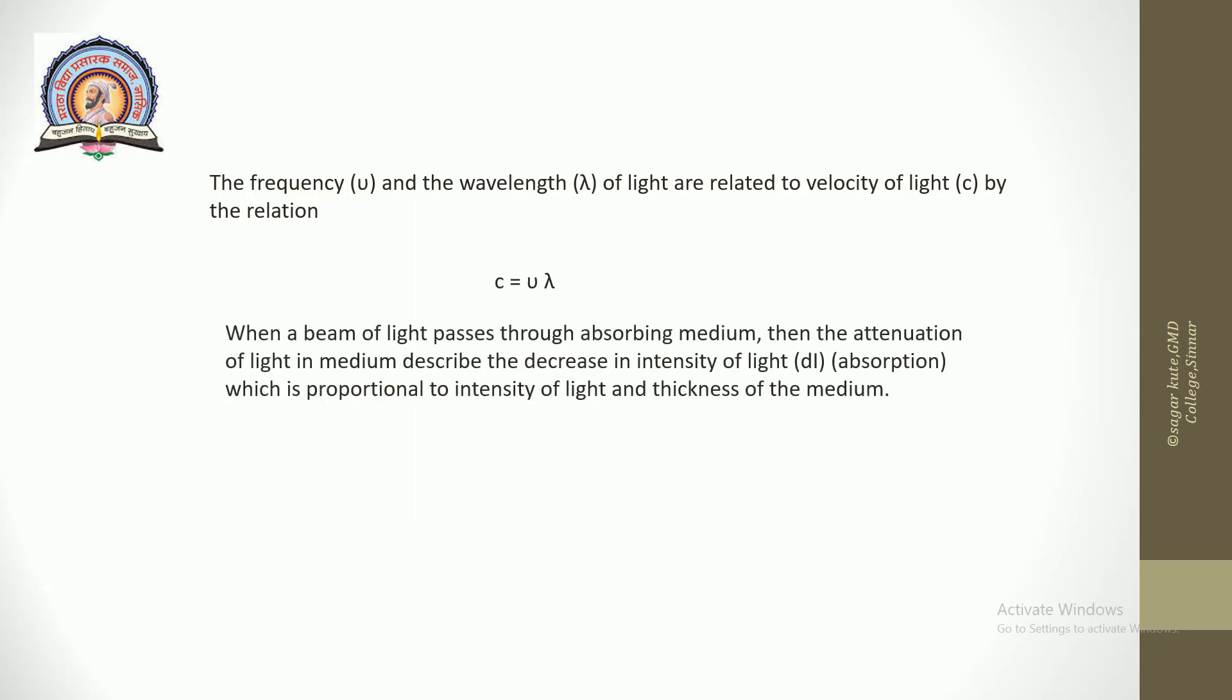When a beam of light passes through an absorbing medium, then the attenuation of light in the medium describes the decrease in intensity of light dI (absorption), which is proportional to intensity of light and thickness of the medium.